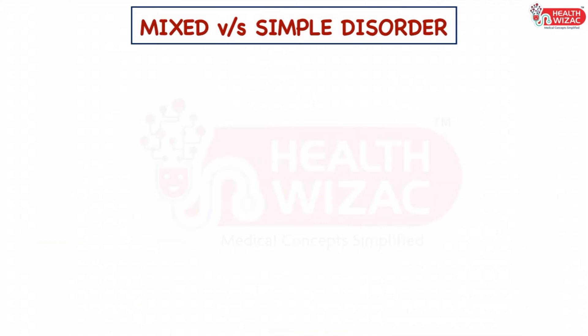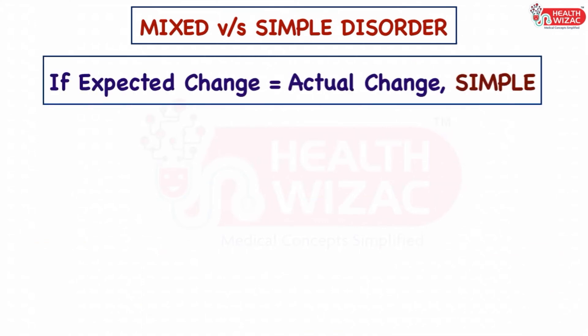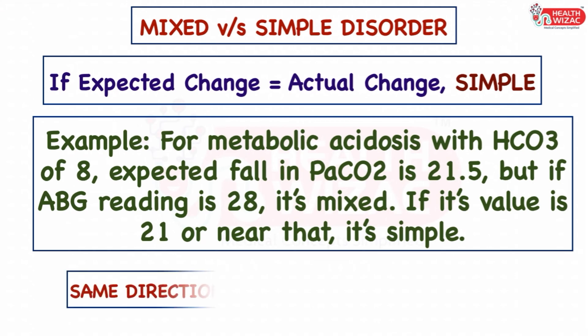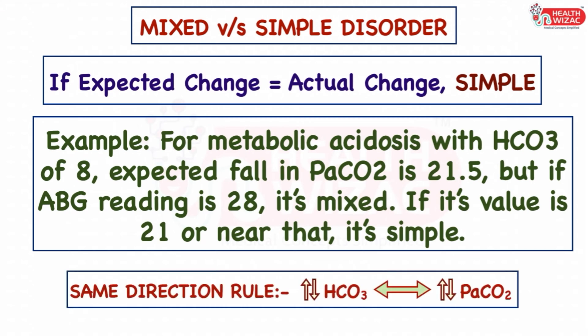Step 5 is to distinguish between simple and mixed disorder. If the expected change equals the actual change, the disorder is labeled as simple. For example, for metabolic acidosis with bicarbonate of 8, if the expected fall in PaCO2 is 21.5 but the ABG reading shows 28, it is labeled as mixed disorder. If the value is 21 or near that, it is labeled as simple disorder. Also, if compensation follows the same direction rule, it is a simple disorder; if not, it is a mixed disorder.